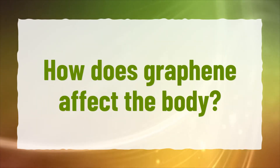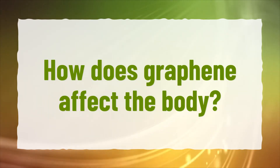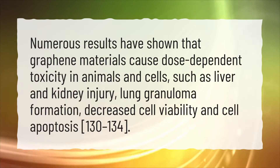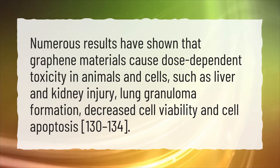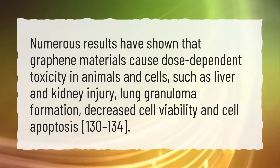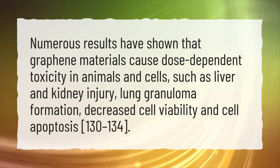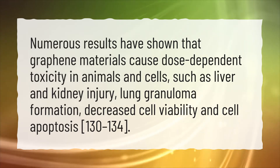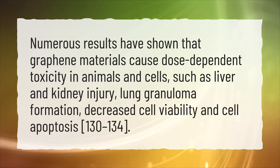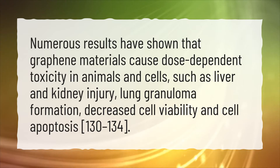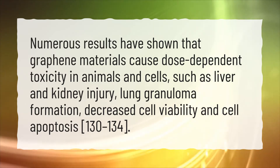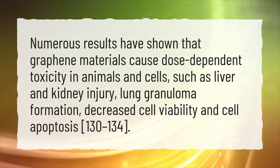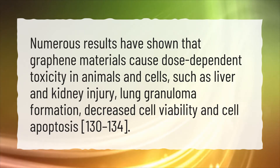How does graphene affect the body? Numerous results have shown that graphene materials cause dose-dependent toxicity in animals and cells, such as liver and kidney injury, lung granuloma formation, decreased cell viability, and cell apoptosis.